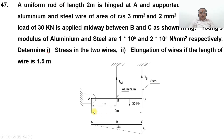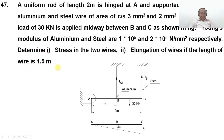So this is the uniform rod of length 2 meters, hinged at A and supported at B and C by aluminium and steel wire of area of cross-section 3 mm² and 2 mm² respectively. A load of 30 kN is applied at midway between B and C, as shown in this figure. Young's modulus of aluminium and steel are 1×10⁵ and 2×10⁵ N/mm² respectively. Determine stress in the two wires and elongation of the wire if the length of the wire is 1.5 meters.